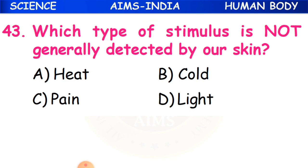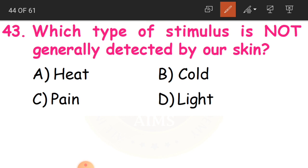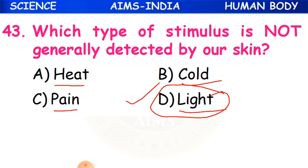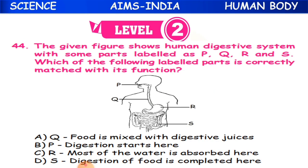Question 43: Which type of stimulus is not generally detected by our skin? The skin feels heat, cold, and pain. However, the skin does not detect light. So D - light - is the correct answer.